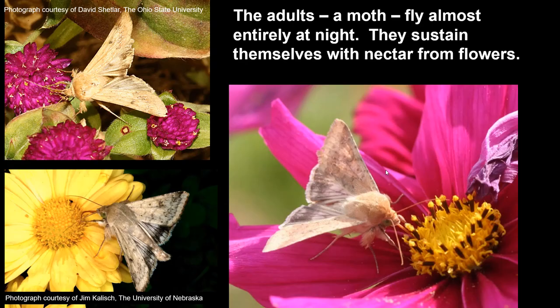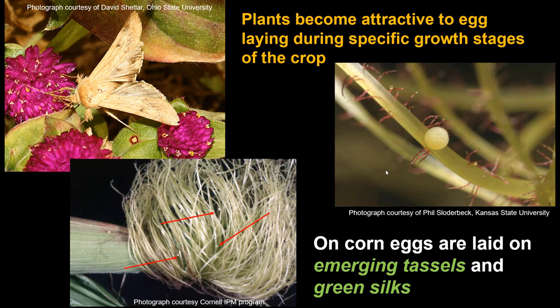This insect does survive over winter consistently in the southern part of the United States, and little if at all in the northern part, with an in-between zone. It is a highly migratory species that flies at night. When not flying, they sustain themselves with nectar from flowers, which is important for keeping them going. They will mate and females will lay eggs. Many infestations coming into northern parts of the country originate from the south, and even in southern areas they are redistributing.